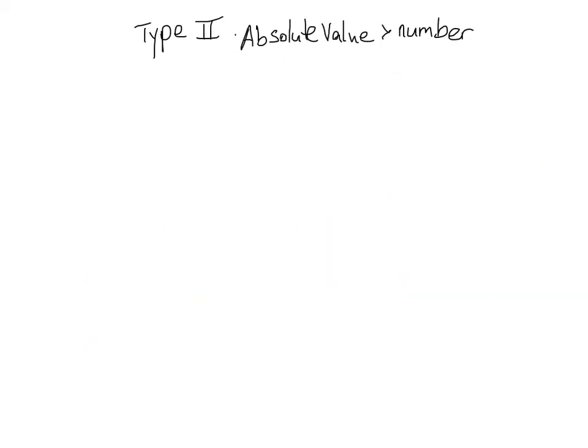In our second type of absolute value inequality, our absolute value expression will be more than or greater than the number. So let's just jump right into an example so you can see what I mean. So we're going to solve the absolute value inequality, the absolute value of 3x minus 2 is greater than 8.